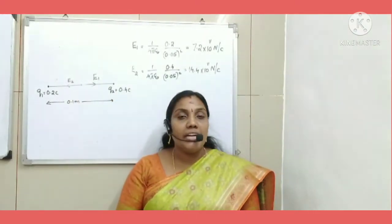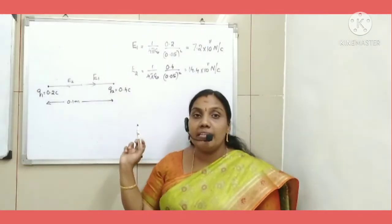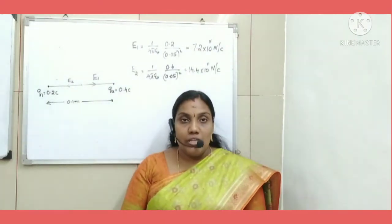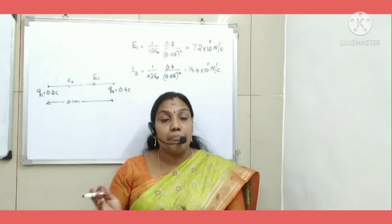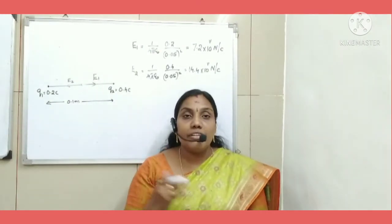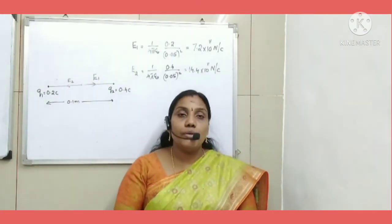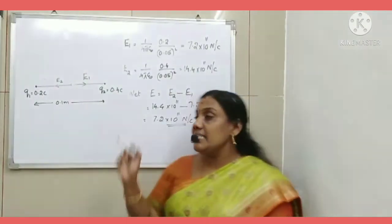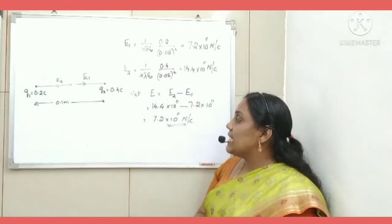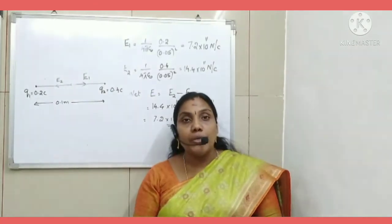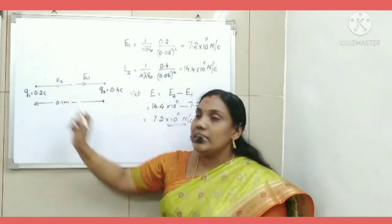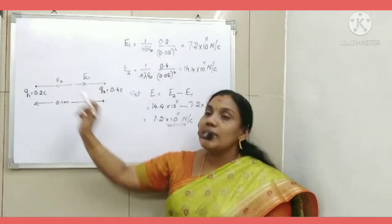Now, the net electric field at the midpoint: since E1 is towards the right and E2 is towards the left, they are in opposite directions, so we subtract them. Net electric field = E2 − E1 = 14.4 × 10¹¹ − 7.2 × 10¹¹ = 7.2 × 10¹¹ N/C. Since E2 is greater, the net electric field is in the direction of E2, that is, towards the left.